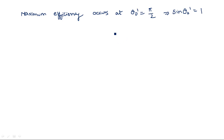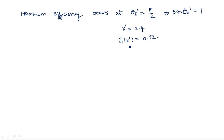We know that x' = 2.4 and J1(x') = 0.52 — the same values used for calculating maximum power — because we get the maximum value when these conditions are met.